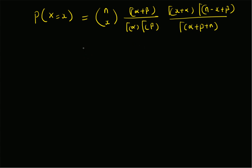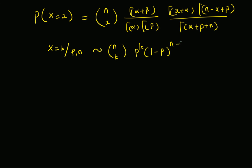Recall that the conditional variable X=k given parameter p and maximum value n follows a binomial distribution: P(X=k | p, n) = nCk times p^k times (1-p)^(n-k). That is the definition of the conditional distribution.